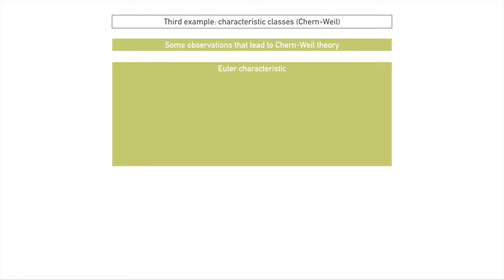We can start with the Euler characteristic, something you might have seen in school or university. It can be said in a very simple way, or expressed in a much more complicated way. For polyhedra, it says that if you take the number of vertices, subtract the number of edges, and add the number of faces, you get a number, and this number can tell you things about your polyhedra. This is kind of the first statement of what the Euler characteristic is.